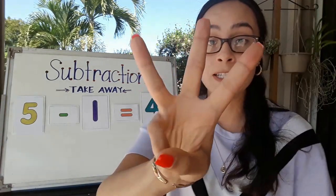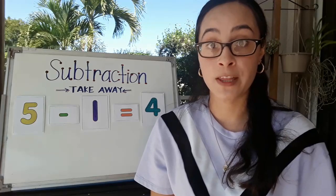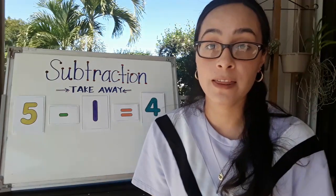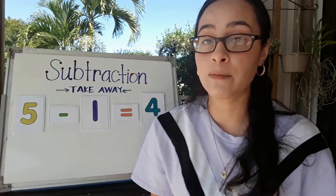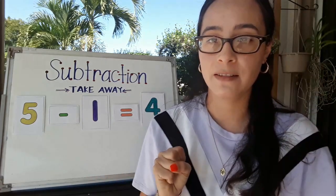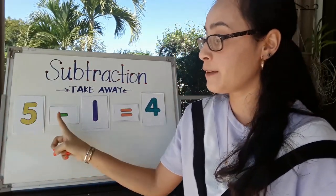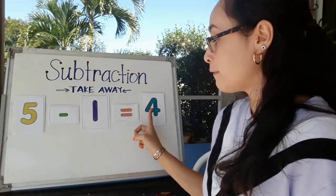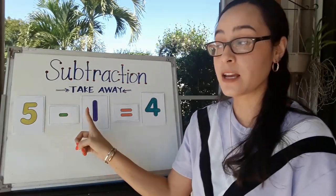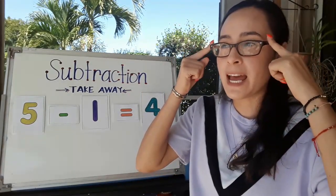So now I'm going to teach you three different strategies you can use when solving a subtraction problem. They're similar to the ones I've taught with addition problems — I'm going to link those videos down in the description below. When we talk about subtraction, we're talking about taking away. When we read this sentence, we can read it in two different ways: we can say five minus one equals four, or you can say five take away one equals four. I like to say take away because that paints a picture in my head about what I have to do.